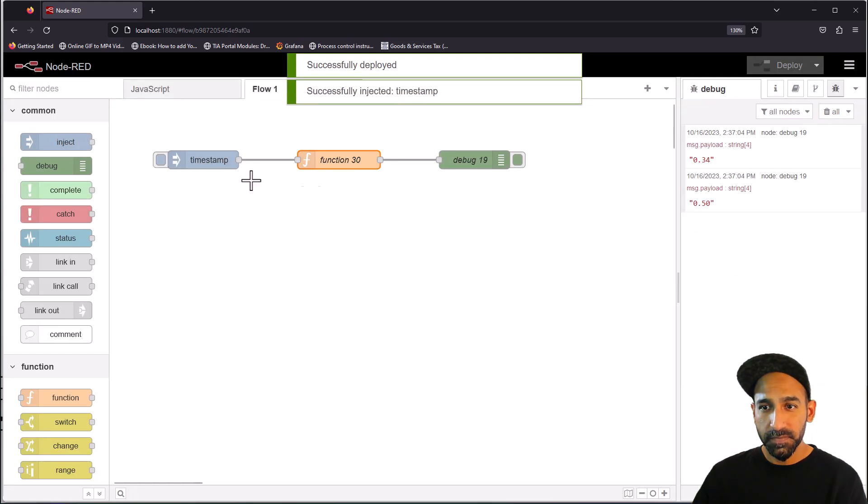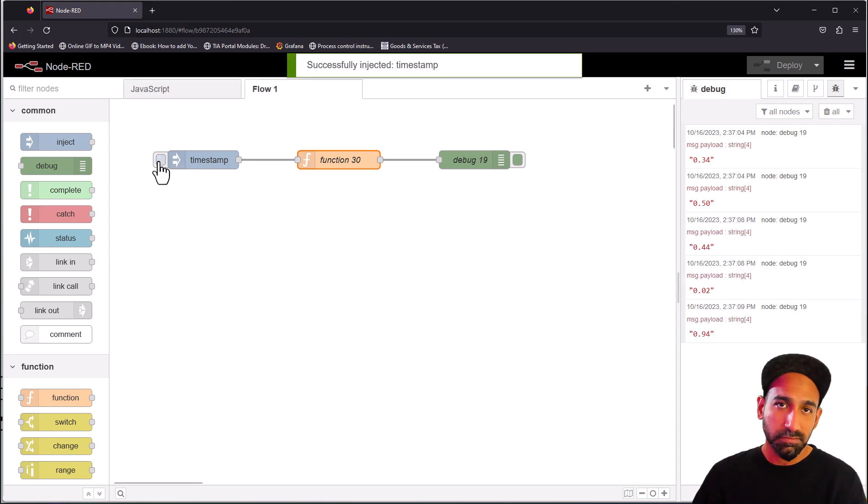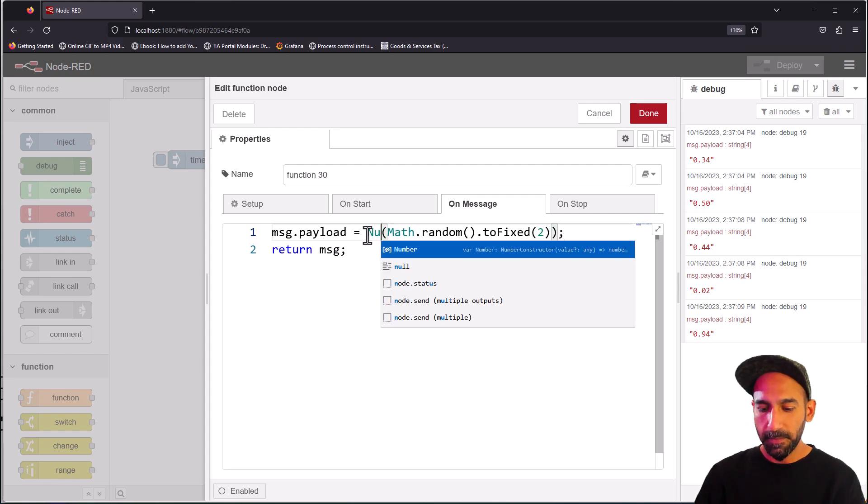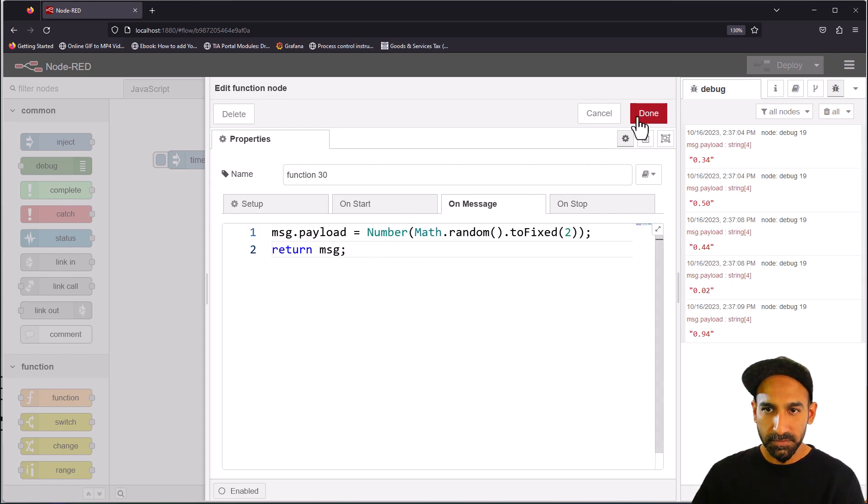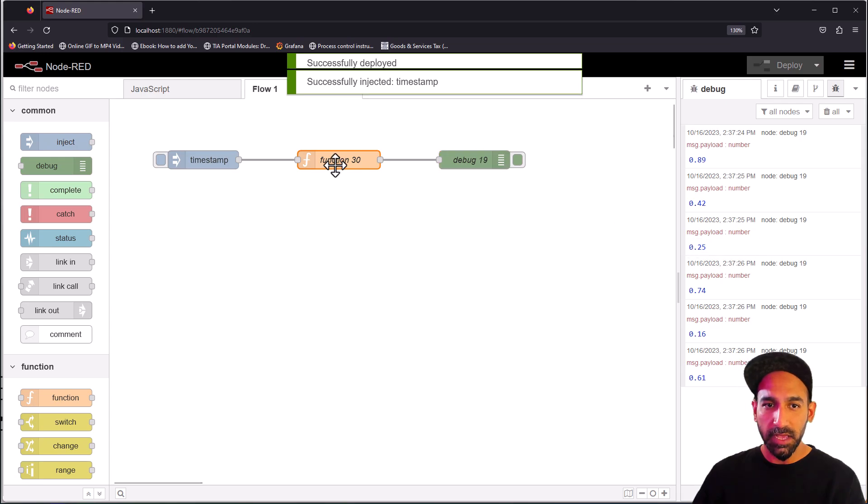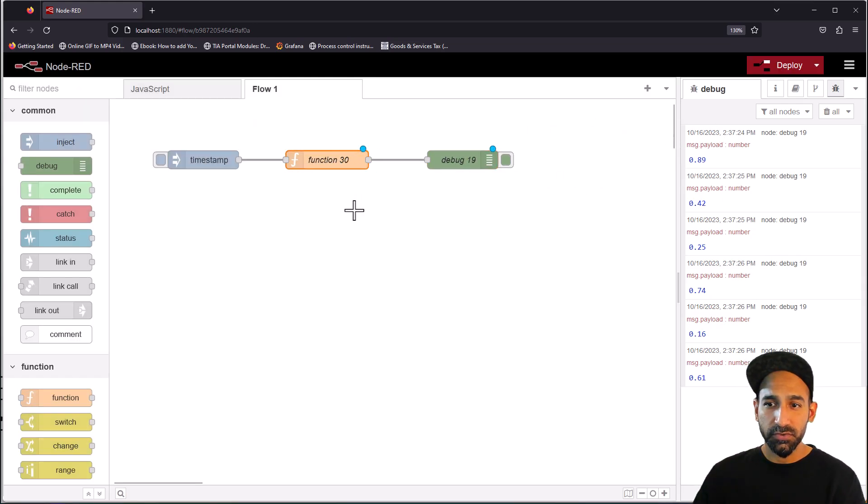But strange enough, it converts the number to a string by default, which we don't want. But you can put a bracket around this whole statement and type here number. By this you convert string back to a number, and click deploy. Now you'll see you have two decimal points and a number. If you want to convert that from zero to one hundred, you can multiply Math.random by one hundred, then fix it, then convert back to number.